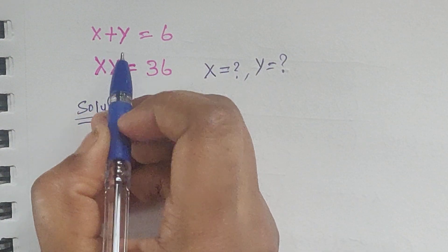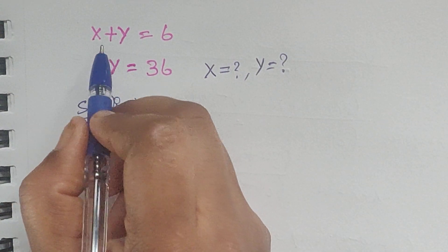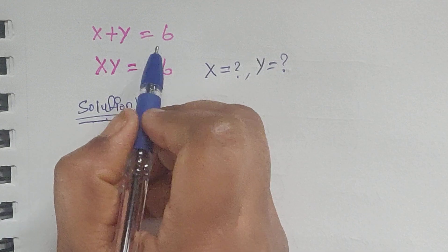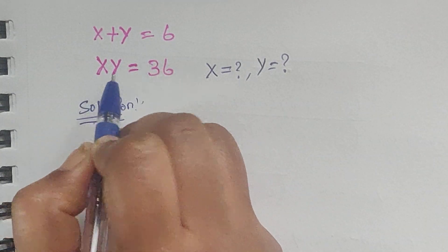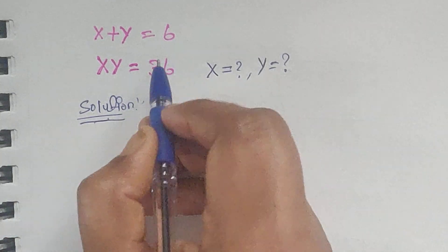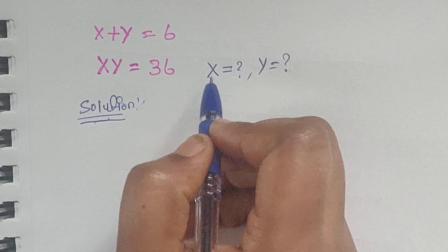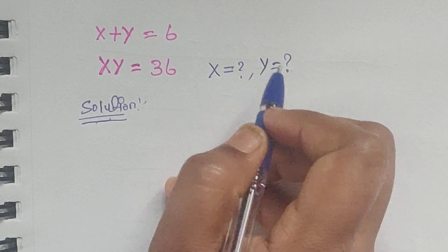Hello everyone, welcome back to our channel. Here we have one problem: x plus y equals 6 and x times y equals 36. In this problem we have to find the value of x and y.